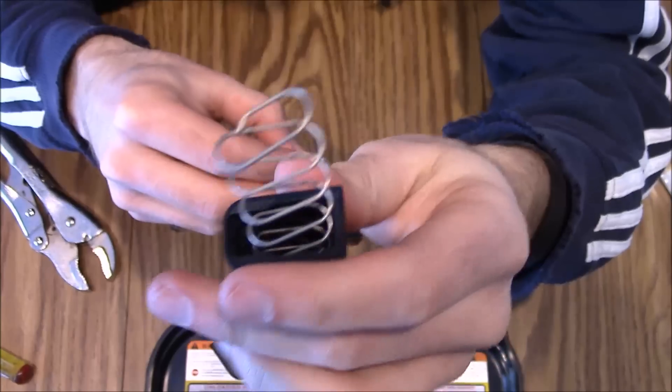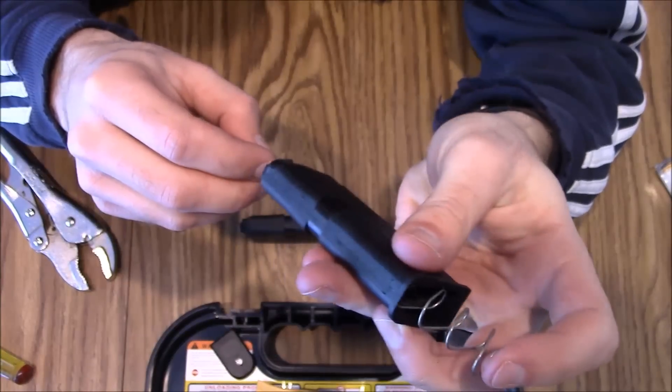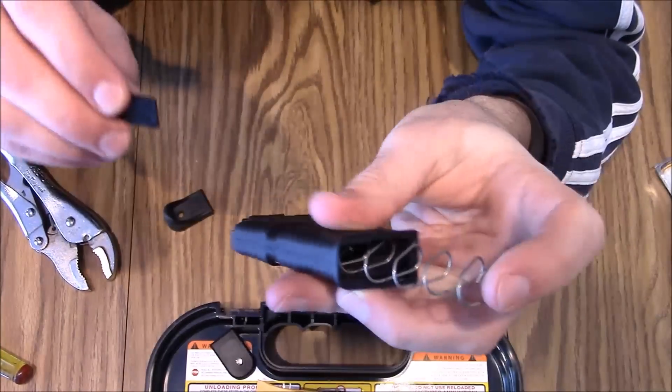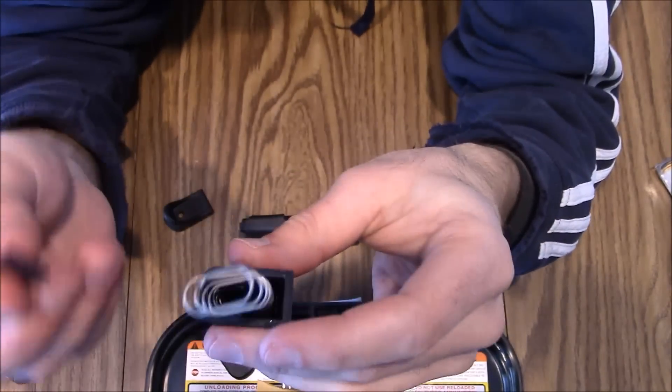We have the spring and the plate contained in there, and then we can let that go. And that comes out. So that's how easy it is to not strain yourself by adding the vice grips there. It just makes it a lot simpler.